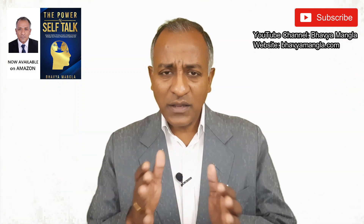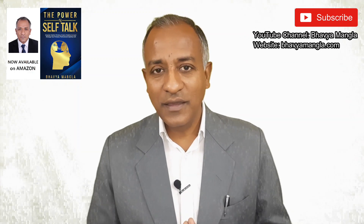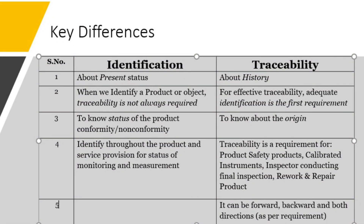The key differences between identification and traceability: identification is about the present — what is the current status of the product or service. Traceability is always about the history. When identifying a product, traceability is not always a requirement. However, for good traceability, identification is a must — unless we have a good identification system, we cannot have a good traceability system.